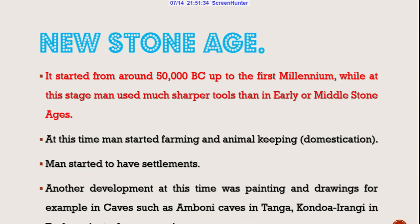The new Stone Age lasted from 50,000 BC up to the 5th millennium. At this stage, man used sharper tools compared to the early and middle Stone Age. Man also started domestication and farming.